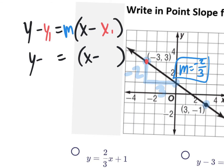After finding the slope, they want you to write it in point-slope form. We have two points — let's go with the first one: negative 3, positive 3 as our x1, y1. Rewrite point-slope form with blank spots so you don't make mistakes. You'll have 3 for y1, negative 2 thirds for the slope, and negative 3 for x1. The minus-minus changes to plus-plus.